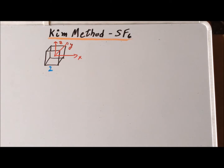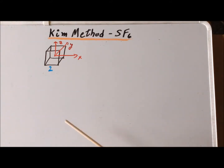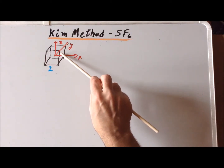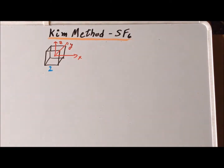Hello. In this video, we are going to derive the bending normal modes of vibration for sulfur hexafluoride using the Kim method. Recall that in part one, we had defined positions for the six fluorine atoms of sulfur hexafluoride, and each of those positions was at the center of the face of a cube.